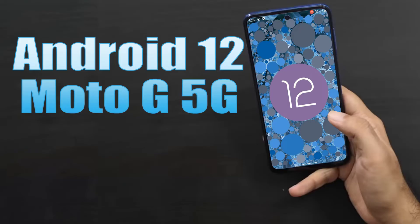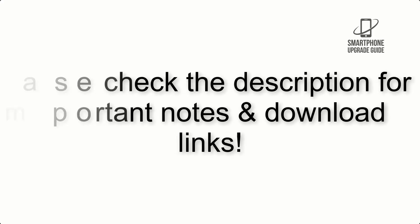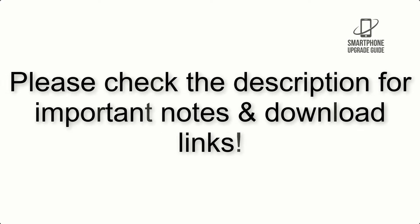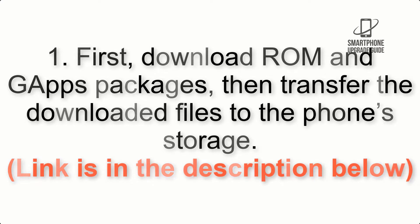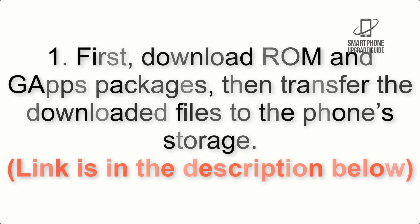Install Android 12 on Moto G 5G via Lineage OS 19.1. Please check the description for important notes and all the download links. First, download the ROM and GApps packages, then transfer the downloaded files to the phone storage. The link is in the description below.